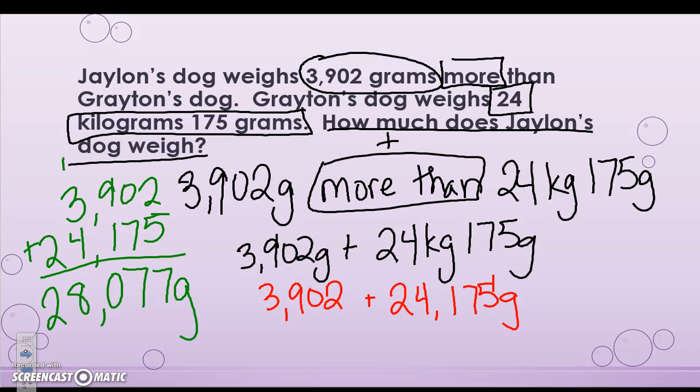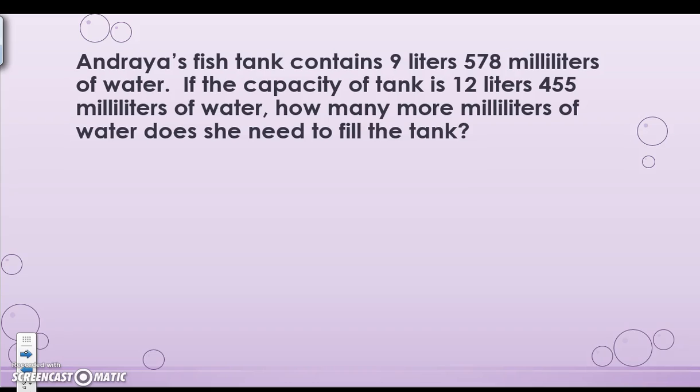Now I'm going to put some more problems on the board. You're welcome to practice whichever ones you would like to in order to be prepared for class tomorrow. Andrea's fish tank contains 9 liters 578 milliliters of water. If the capacity of the tank is 12 liters 455 milliliters of water, how many more milliliters of water does she need to fill the tank?